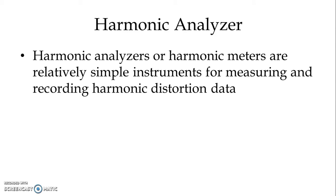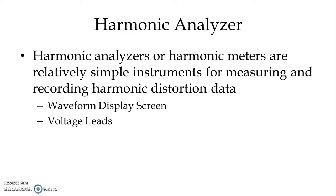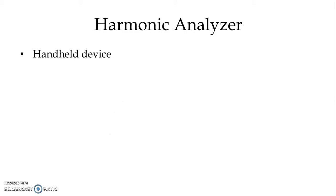Harmonic analyzers, or harmonic meters, are relatively simple instruments for measuring and recording harmonic distortion data. Each harmonic analyzer contains a waveform display screen, voltage leads, as well as current probes. Some harmonic analyzers are hand-held type devices and some are tabletop type.